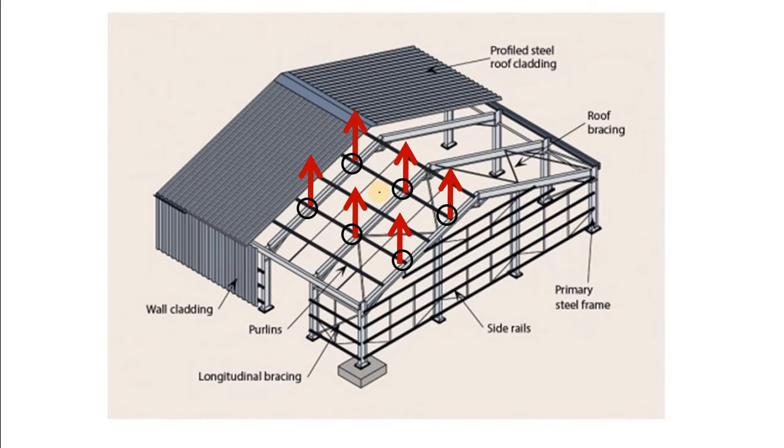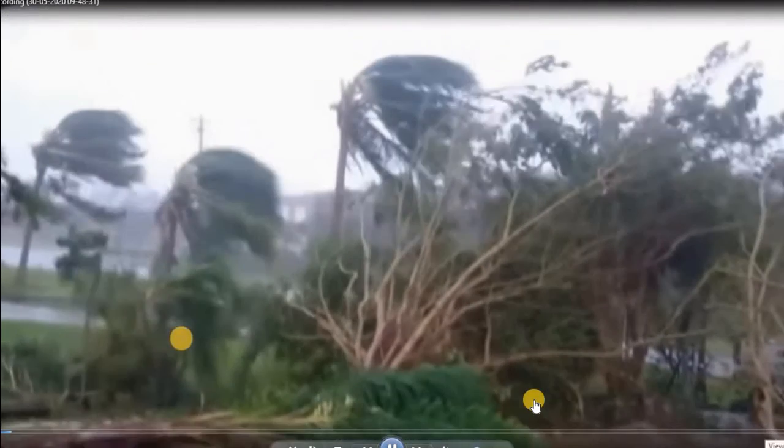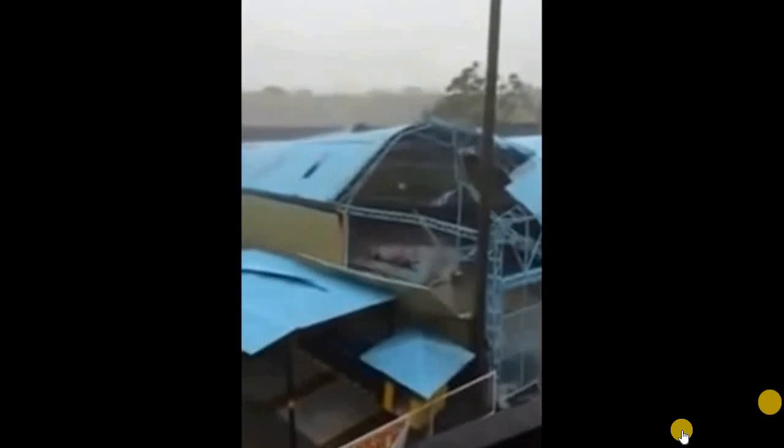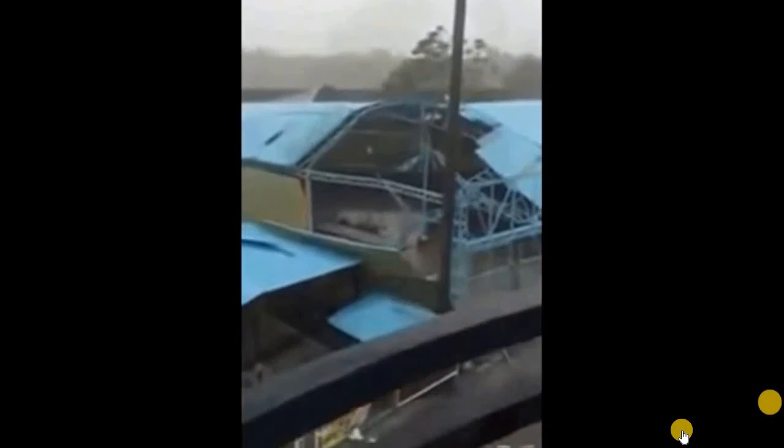Now, let's check how wind load acts on the structure in real life. Here, initially all the joints fail. That's why the sheet has been blown away. Now the joint seems to be okay and they are transferring the load to the truss through purlin. And as the truss is not designed properly, you can see the result.